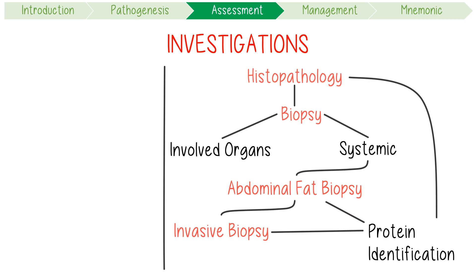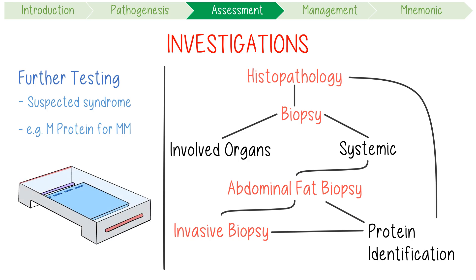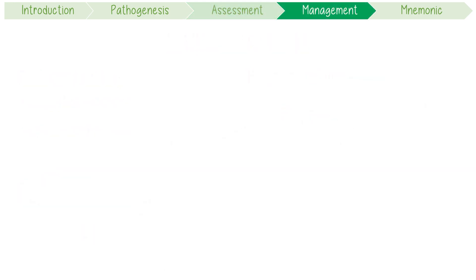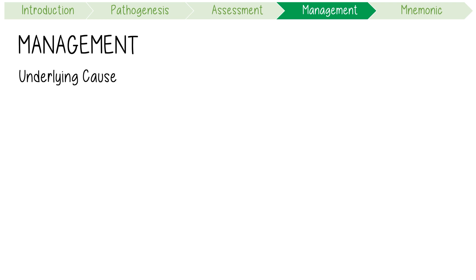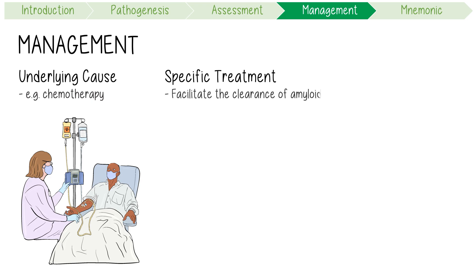You could simultaneously undergo further tests relevant to the suspected syndrome. For example, if light chain fibrils are identified, you should be checking for M protein and investigating multiple myeloma. The treatment of amyloidosis should focus on the management of its underlying cause, so chemotherapy for multiple myeloma causing AL might be a good starting place. However, some subtypes have specific treatment approaches to facilitate the clearance of amyloid deposits.